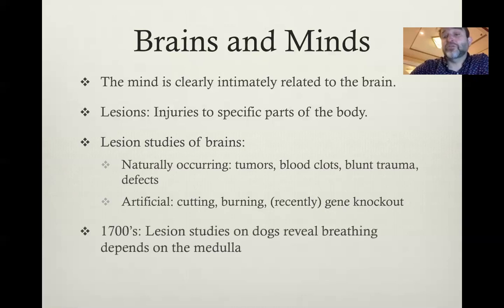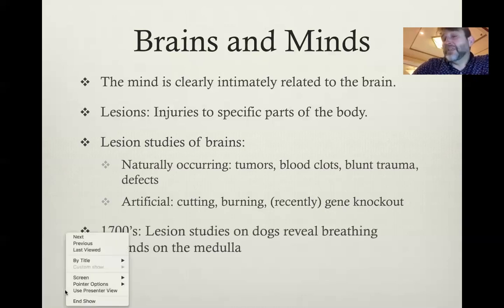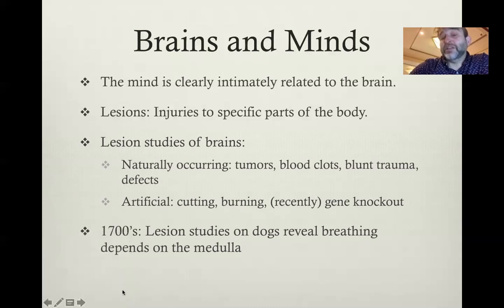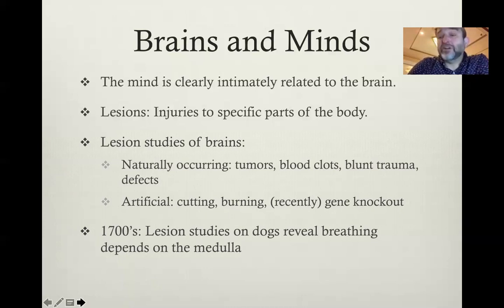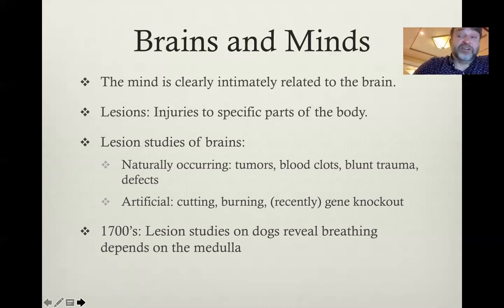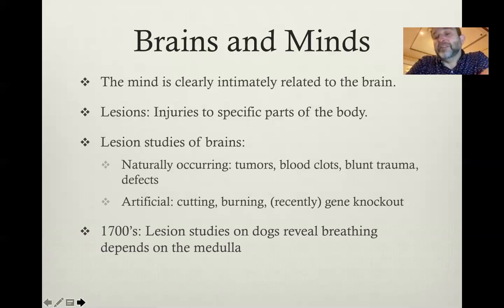The artificial approaches are used on animals. This practice of using lesion studies to investigate the brains and minds of animals began in the 1700s, when it was revealed that the breathing of dogs depended on the medulla. If you were able to lesion the medulla, a dog would cease to breathe and would die. The medulla is a large part of the bottom base of the brain. These were very primitive, brute studies, but over the next few centuries these methods have increased quite a bit.